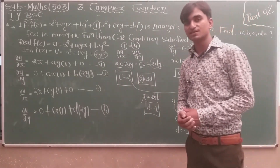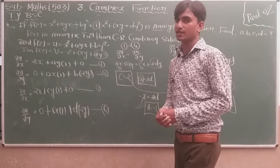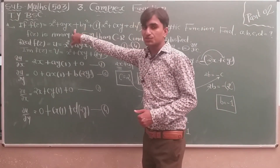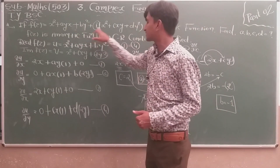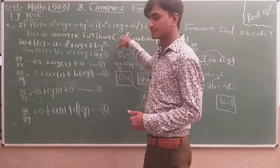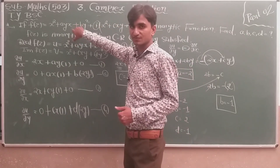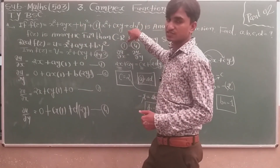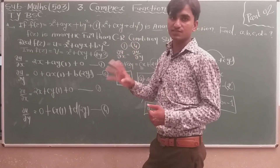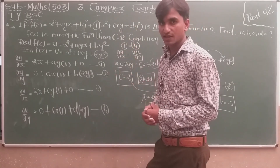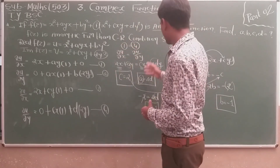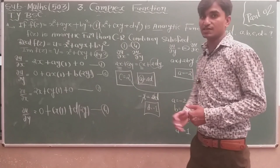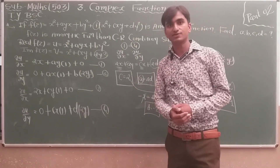In summary, for this example we obtained the real part u and imaginary part v, differentiated u and v with respect to x and y, compared using the CR conditions, and found the constants a = −2, b = −1, c = 2, and d = −1.